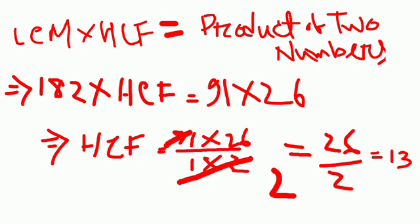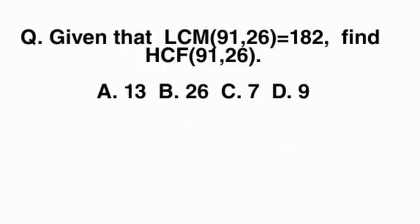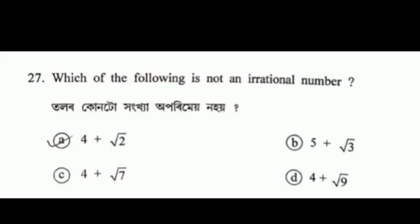The answer to that is 13. The next question is: which of the following is not an irrational number? Option one involves the four plus root nine. Root nine equals three, so that resolves to a rational number.